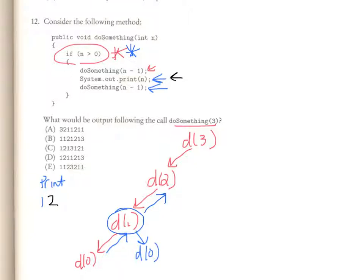So I print a 2, because right now, I am at do something 2. And after I've printed that, now, I have to call do something 1. So now, I call do something 1.